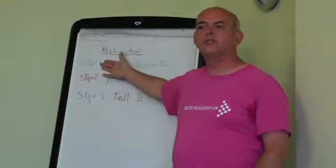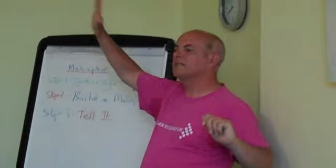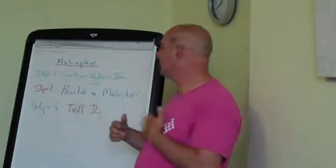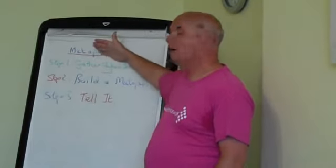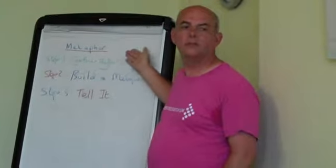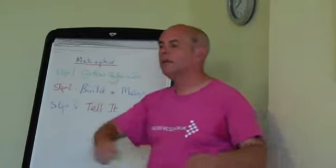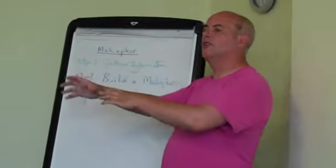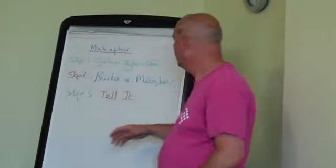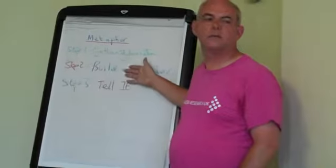Do you remember last time we gathered information and I drew that picture of Pat and the way that she was thinking — where her pictures were, where the sound was, where the feeling was? I'm presupposing now that you've done step one, so you've gathered all the information you need to know the structure of where the person is now, where they want to be, and some transitional steps to get there. The next step is to build a metaphor using that information.